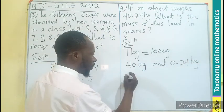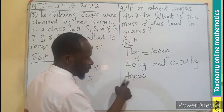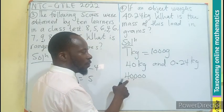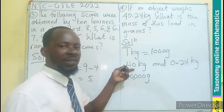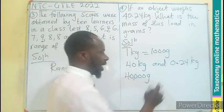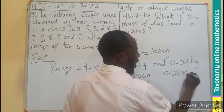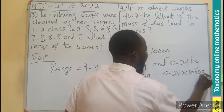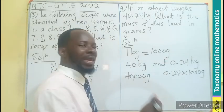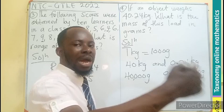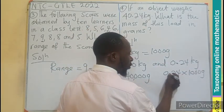So this becomes 40 times a thousand to give us 40,000 grams in the case of 40 kilograms. Then here will also be 0.24 times a thousand grams. Multiplication by decimal: transfer the point to the right according to the number of zeros you have. So it is 1, 2, 3, so 1, 2, 3. The empty space takes 0, meaning 240 grams.